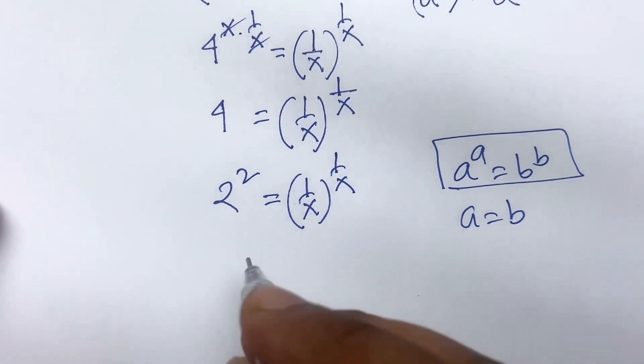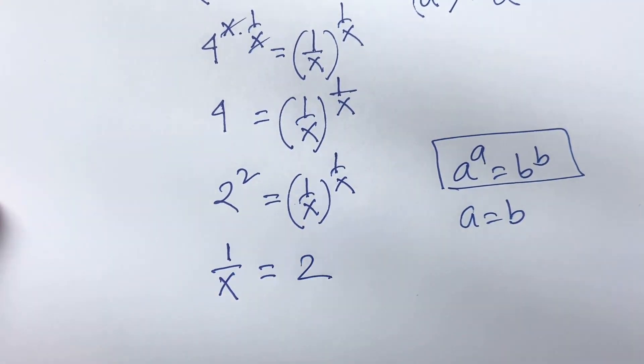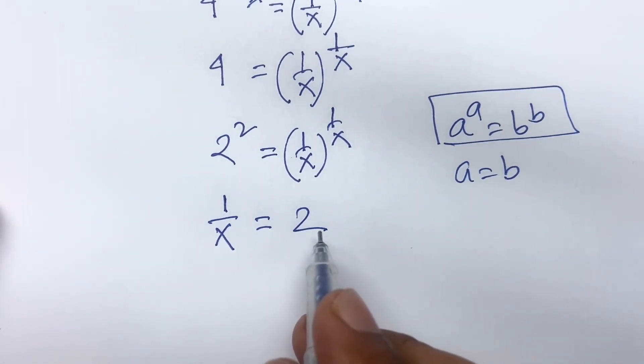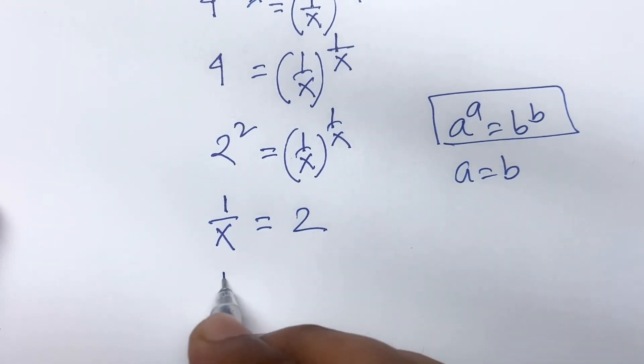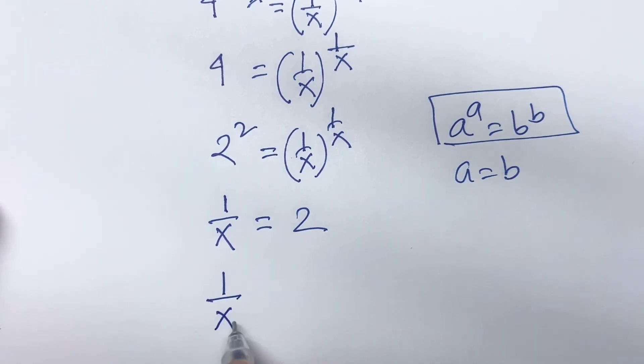So, I can say here is 1 over x is equal to 2. Now, I multiply both sides by x. So, I can say here is 1 over x times x is equal to 2 times x.